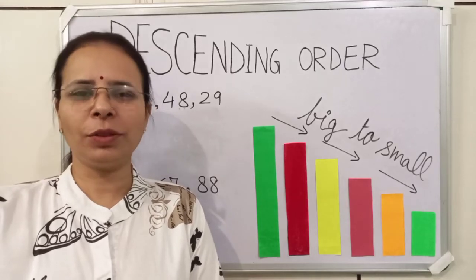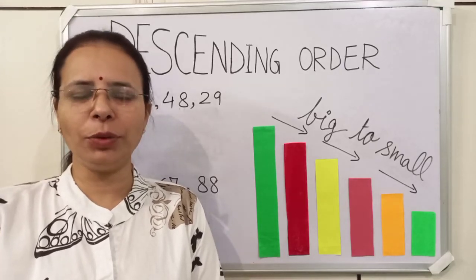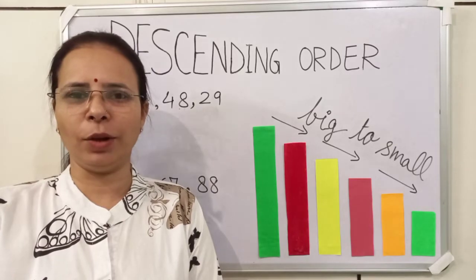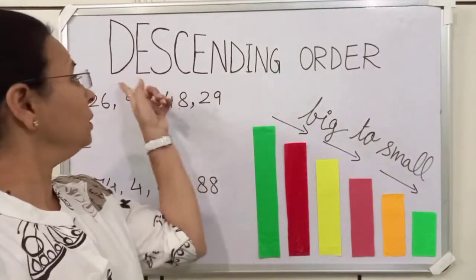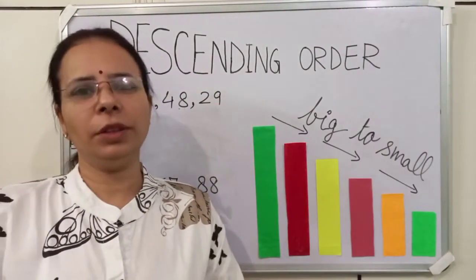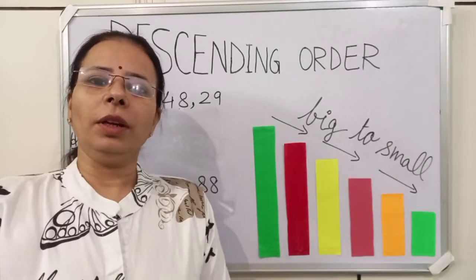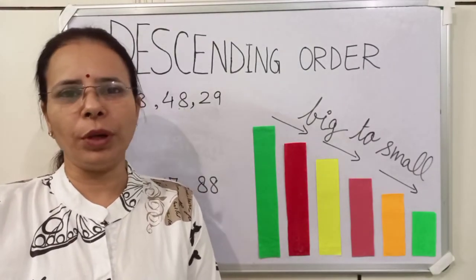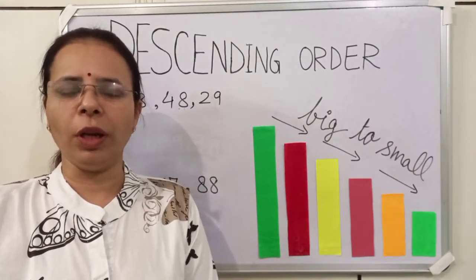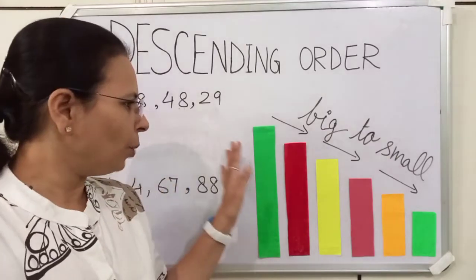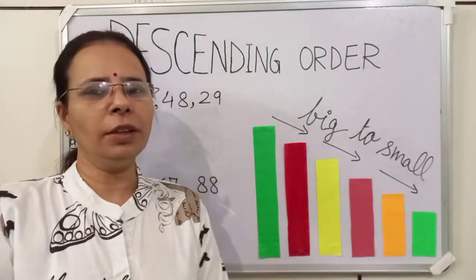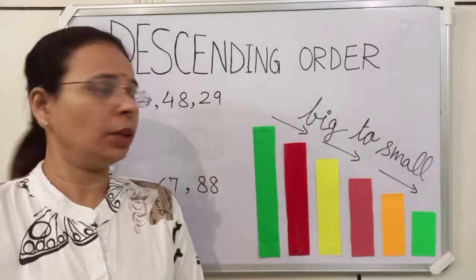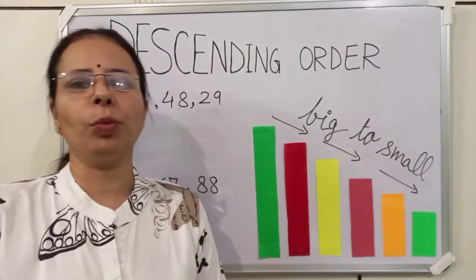Hello kids, today we will learn to arrange two digit numbers in descending order. The word descend means going down. It means we have to arrange the numbers from big to small. You can see on the board, bars are arranged in descending order or decreasing order from big to small.